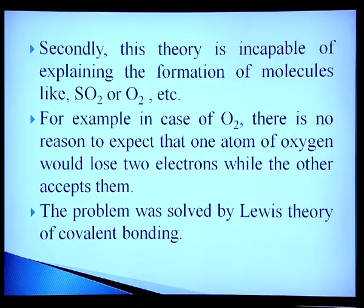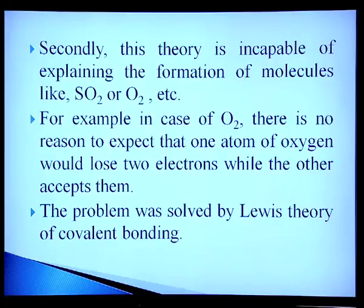Kossel's theory explains bonding quite well, but only for a small class of solids composed of electropositive elements of groups 1 and 2 with highly electronegative elements of group 17. This theory is incapable of explaining the formation of molecules like SO₂ or O₂. For example, in O₂ there is no reason to expect one oxygen atom would lose two electrons while the other accepts them. This problem was solved by Lewis theory of covalent bonding.